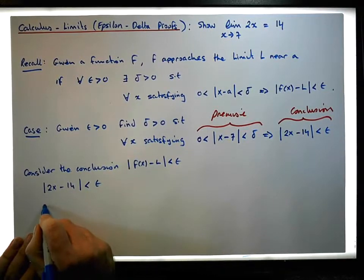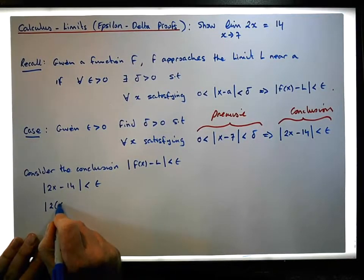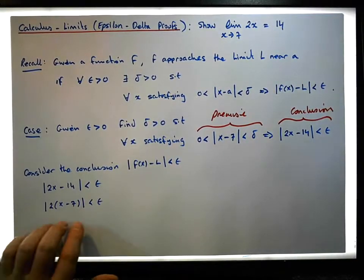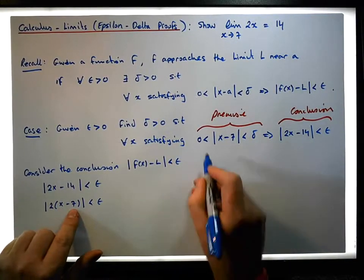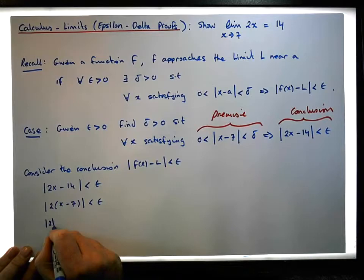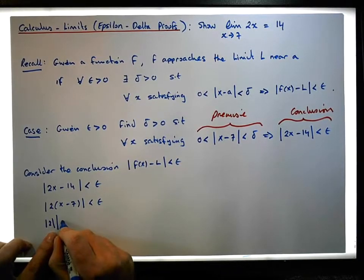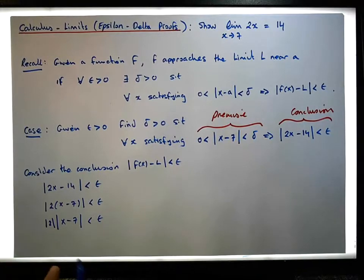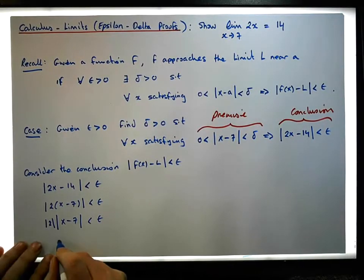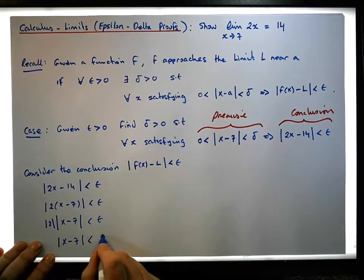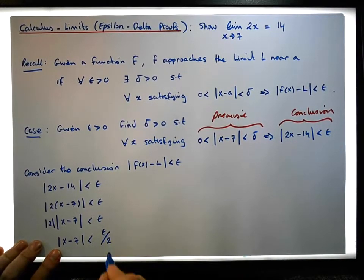So let's take the two out. This becomes the absolute value of two times x minus seven, which is less than epsilon. There's the x minus seven now. The absolute value of two times x minus seven is the same as the absolute value of two times the absolute value of x minus seven, and it must be less than epsilon. Now if we divide across by the absolute value of two, we end up with the absolute value of x minus seven is less than epsilon over two.